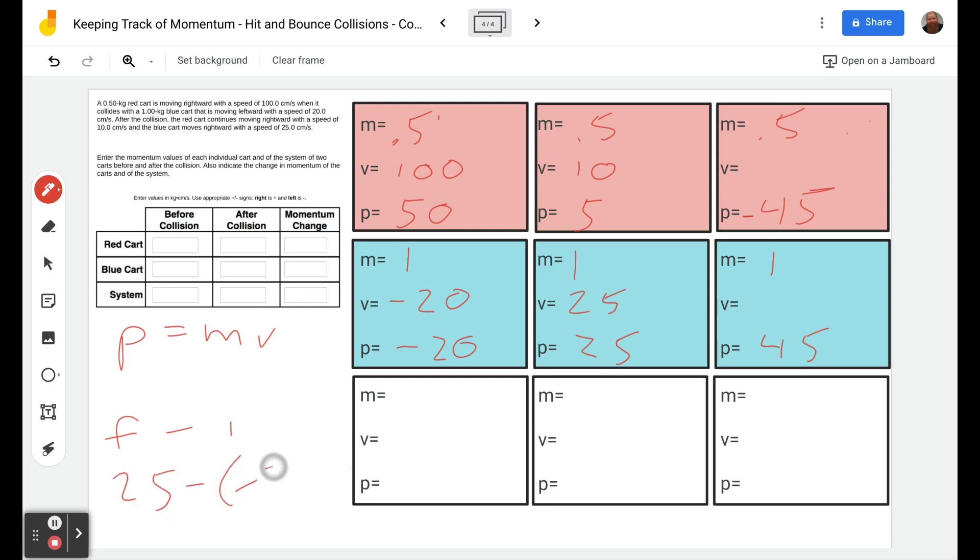For our totals we add them up: 50 plus negative 20 is 30. It started with 30, it had better end with 30 because momentum before collision must equal momentum after collision. Sure enough, 5 plus 25 gives us 30. This should always be zero—30 changing to 30 is a change of zero. A change of 45, a change of negative 45, and a change of 45 gives us a total change of zero.